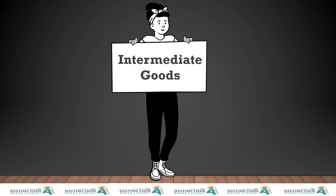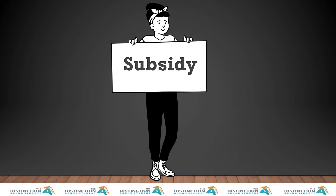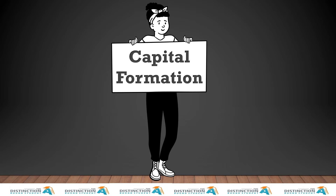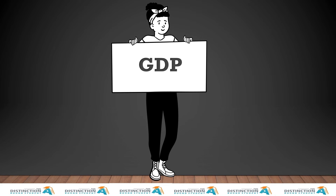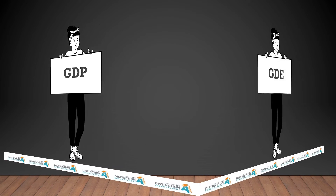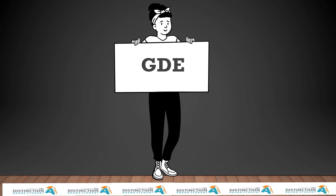Intermediate goods are goods that are used in the production of other goods. A subsidy is a direct or indirect payment to individuals or firms, usually in the form of a cash payment from the government or targeted tax cut. Capital formation is the creation of additional physical assets or capital goods by the collective savings in the economy. GDP or gross domestic product is the total market value of all final goods and services produced within the borders of a country over a specific period of time, usually over a year.